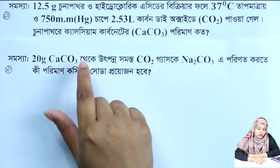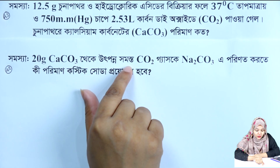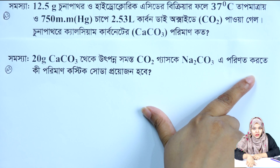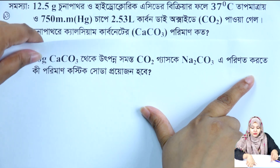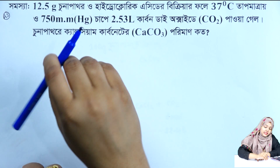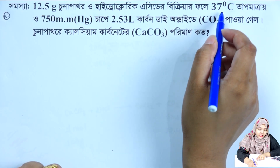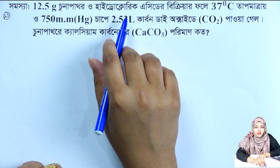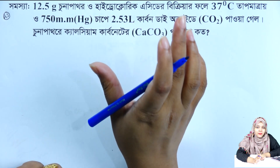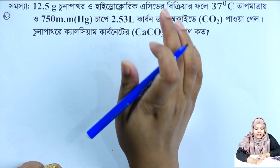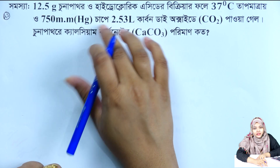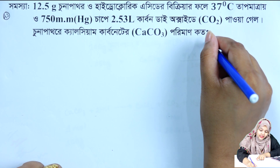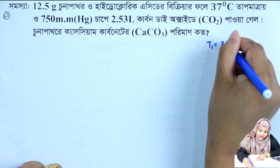We will announce our 20g calcium carbonate and we will be able to get the carbon dioxide gas. The temperature will be converted — T1 is equal to 37 degrees Celsius.